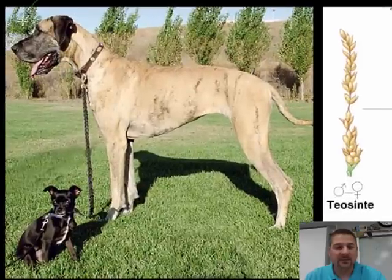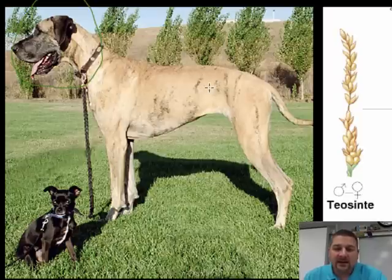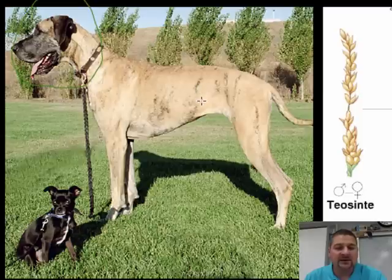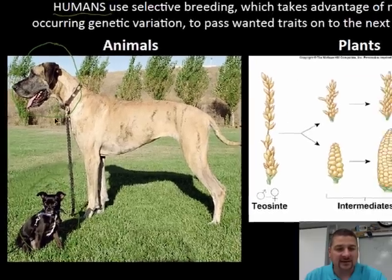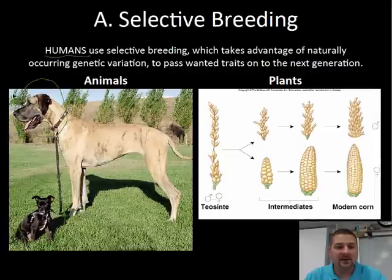For example, if you look at the animals, you've got really big dogs like the Great Dane that were selected for large traits for hunting, herding sheep, guarding properties, and pulling carts. Then you have small dogs like the Terriers that were bred either for hunting in small rodent holes or as lap dogs for royalty. Obviously you can't have a Great Dane sitting on the Queen's lap — that would be a little awkward.